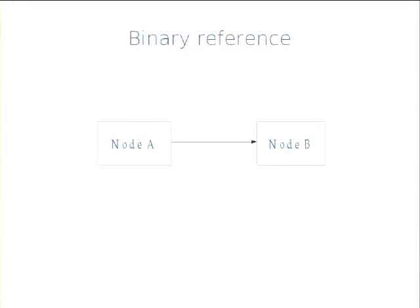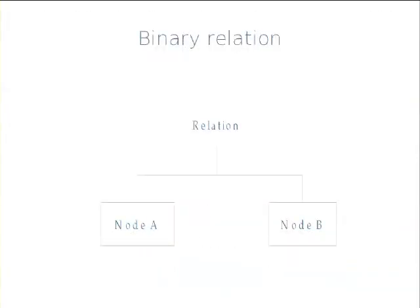The first example is the way many of you have probably done this before — you have node A and you link to node B. This could be an article node linking to a fact box, or a blurb for an article linking to the article, and it goes just one way. Now if you have a binary relation, the relationship looks like this instead: you have the relation entity at the top, and then this relates to both node A and node B. Afterwards, you can set whether you want this to be a directional relationship or a symmetric one.